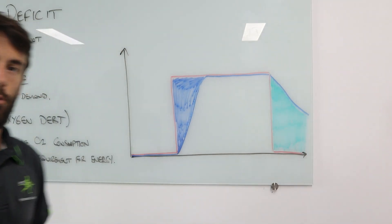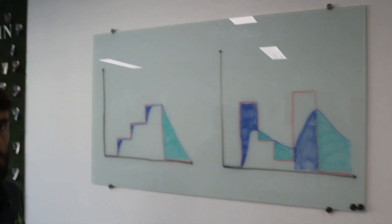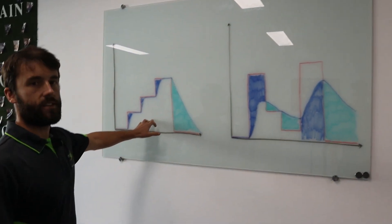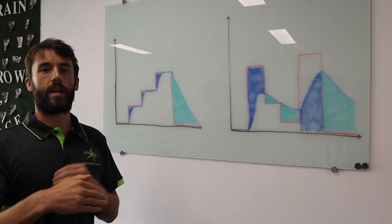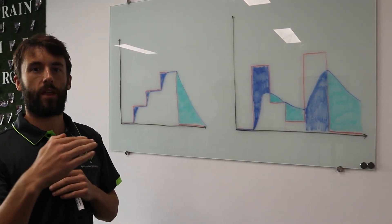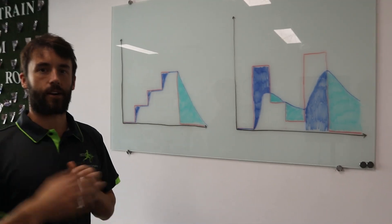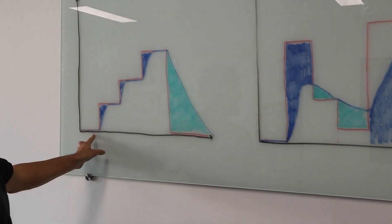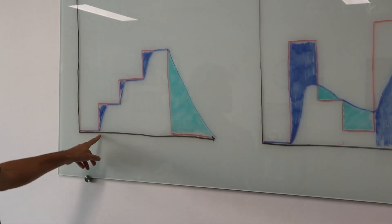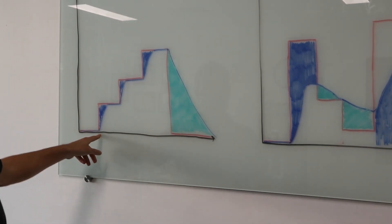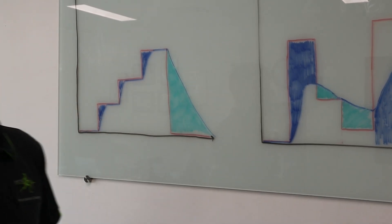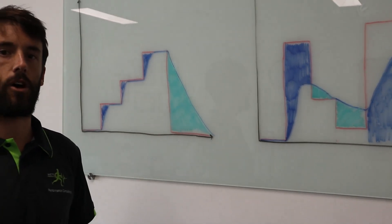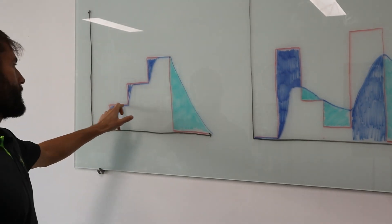Looking at a few different sporting situations — this first graph is a beep test or VO2 max step test, where we increase the intensity, hold it for a little while, then make it harder. Here's our rest: steady state at rest, supply meeting demand. We start the beep test, go to level one, the demand goes straight up and it takes some time for the supply to catch up. So we have a deficit, then a steady state.